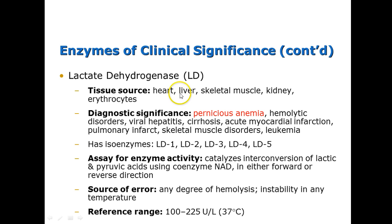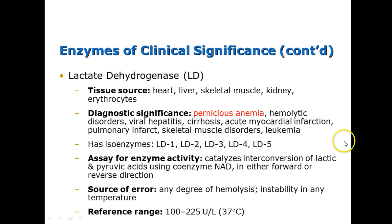The next enzyme is lactate dehydrogenase, sometimes called LD or LDH. It is found in the heart, liver, skeletal muscle, kidney, and red blood cells. It is of diagnostic significance specifically in pernicious anemia, but also in hemolytic disorders, viral hepatitis, cirrhosis, acute myocardial infarction, pulmonary infarct, skeletal muscle disorders, and leukemia. It also has isoenzymes — LD 1 through LD 5 — some more associated with heart and some more with liver.